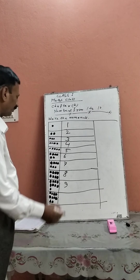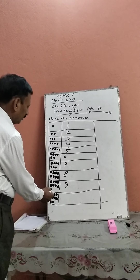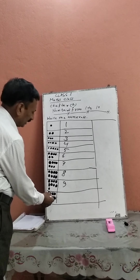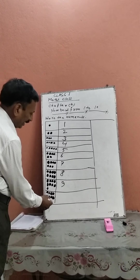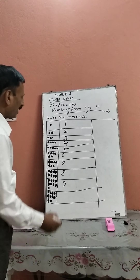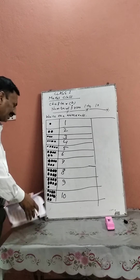Next, there are 10 objects — 1, 2, 3, 4, 5, 6, 7, 8 — in the box, then you should write the number 10.